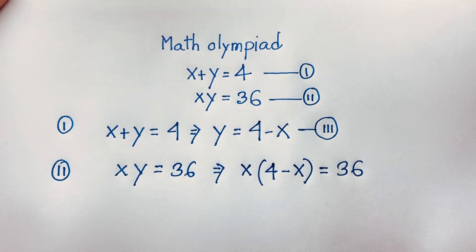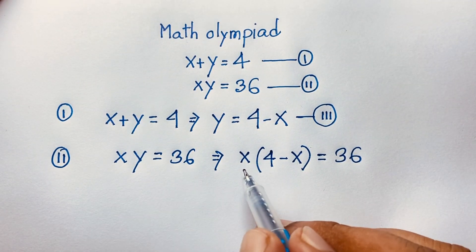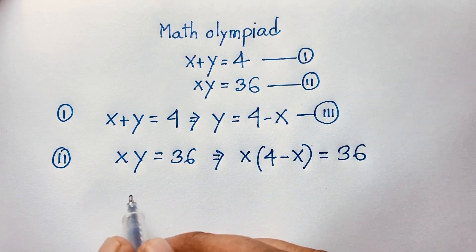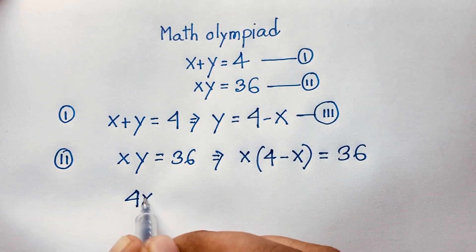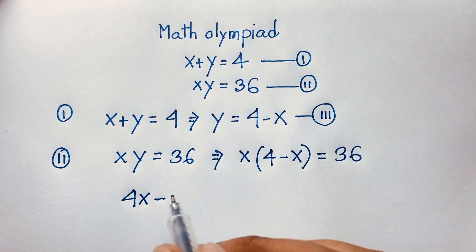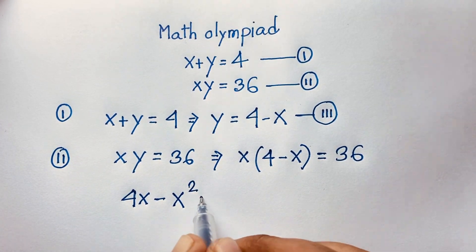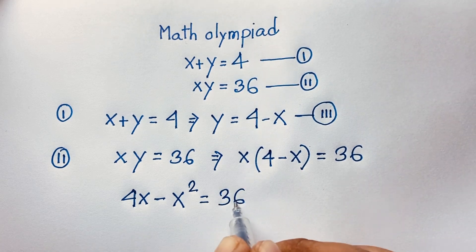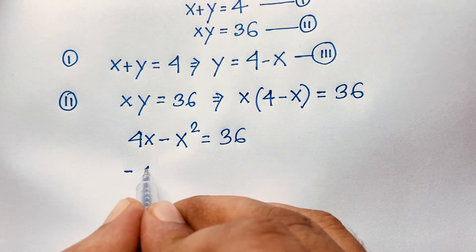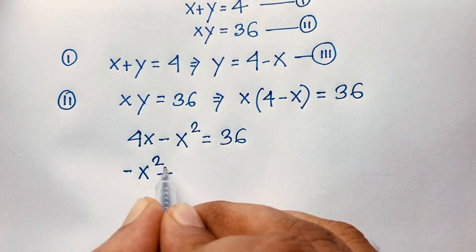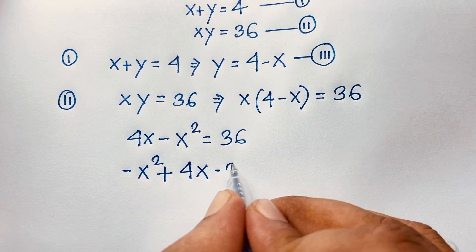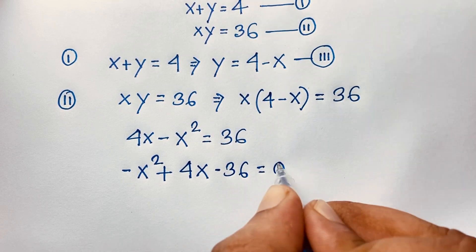Then, expanding: 4 times x will be 4x, and x times x will be x squared, with a minus sign. So we get: minus x squared plus 4x is equal to 36. If I move 36 to this side, it will be minus x squared plus 4x minus 36 is equal to 0.